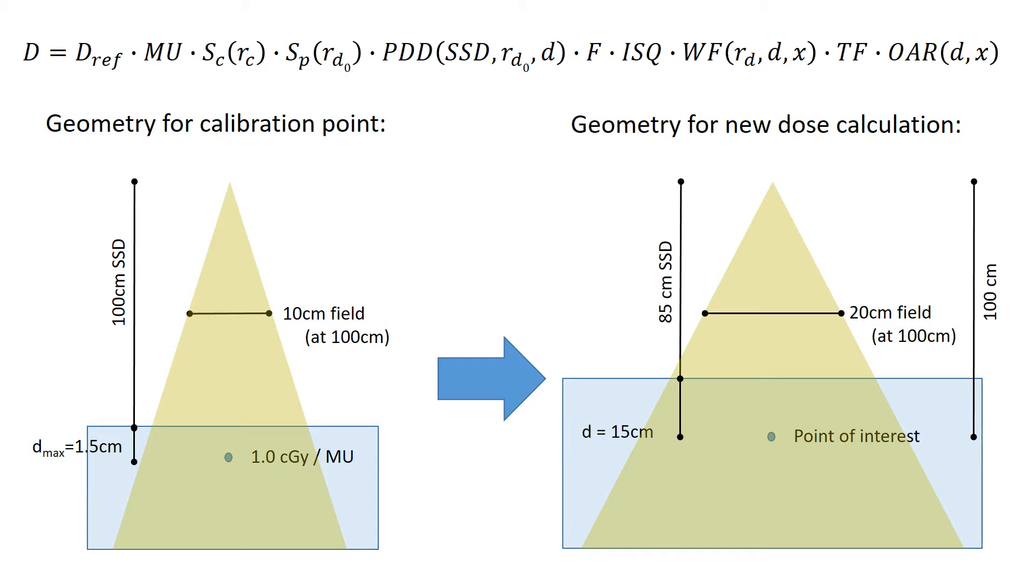And just to note here that the distance to the point of interest from the target is 100 cm. So this is really an SAD setup, but we're going to use a PDD method to calculate this.